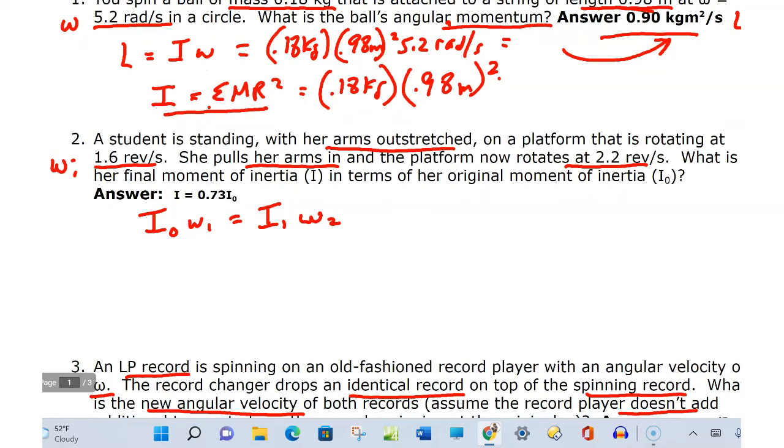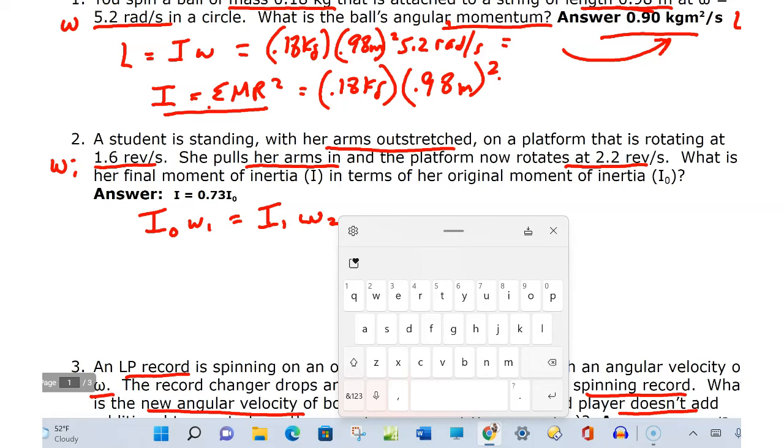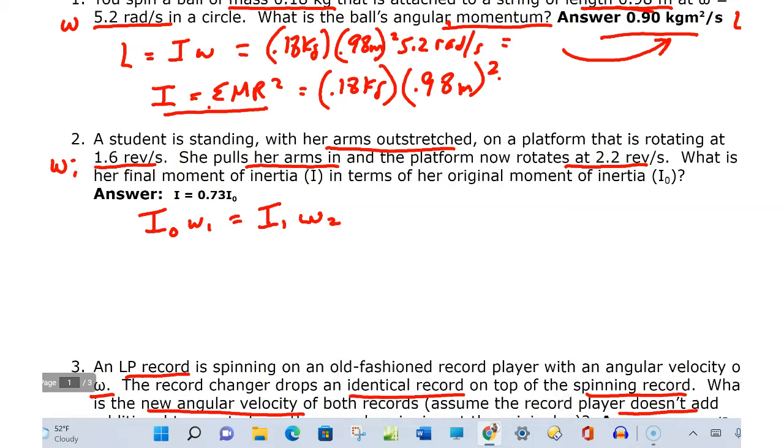The student's standing with her arms outstretched on a platform that's rotating. There's your ω, and she pulls her arms in like that man in the previous video, and now she's going at 2.2 revolutions per second. She went from 1.6 to 2.2. Pulling in her arms, she's reducing her moment of inertia and increasing her rotational velocity. What is her final moment of inertia?